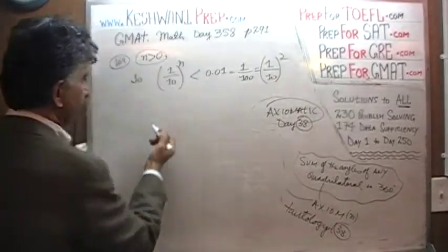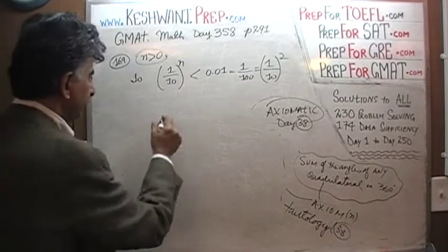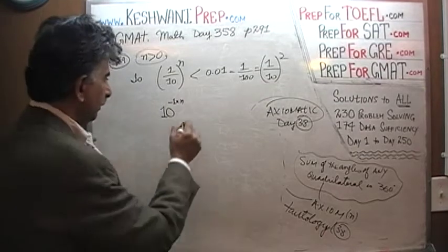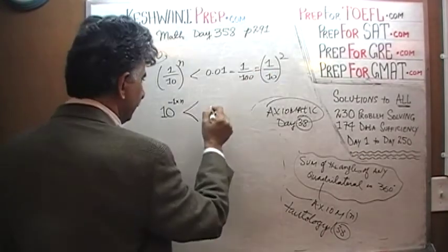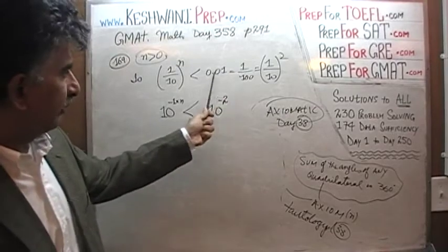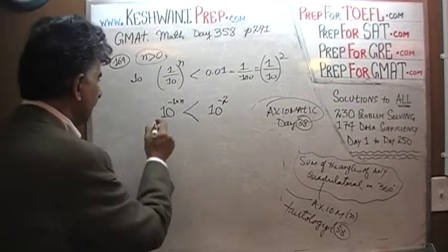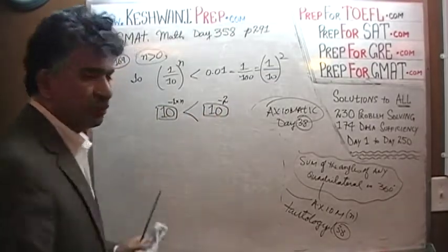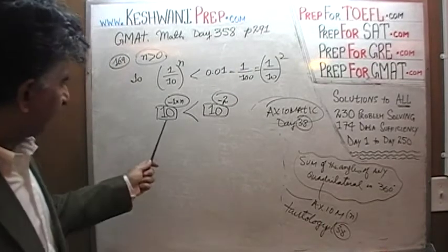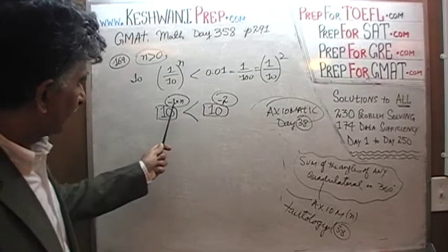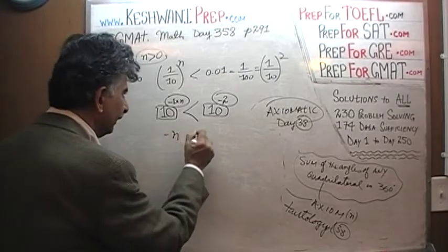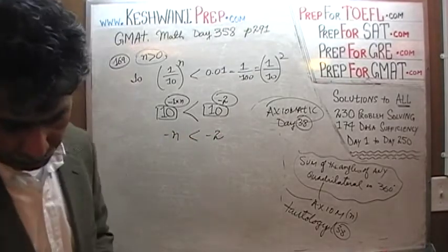1 over 10 raised to N is the same as 10 raised to negative N. And the question is whether that is less than 0.01, which can be written as 10 raised to negative 2. Now we have the same base of 10, which means we can compare exponents directly. So asking whether 10^(−N) < 10^(−2) is the same as asking: is negative N less than negative 2?